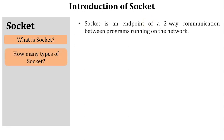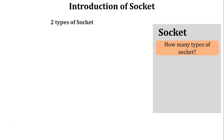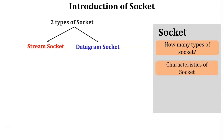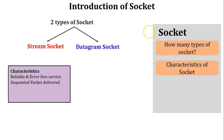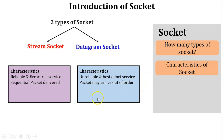There are two types of sockets: the first one is stream socket, and the other is datagram socket. The characteristics of stream socket are reliable and error-free services — meaning during transmission, if any packet is lost or damaged it is resent by the sender. Another characteristic is sequential packet delivery, where the sender assigns sequence numbers to all packets and sends them one by one sequentially.